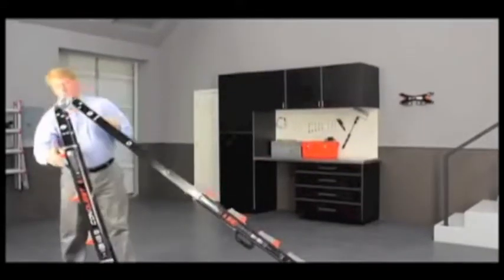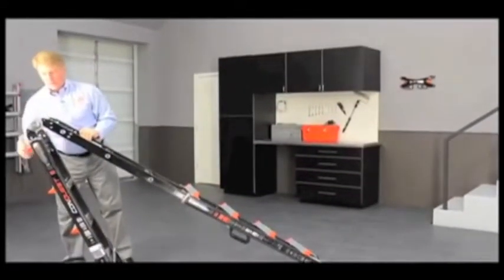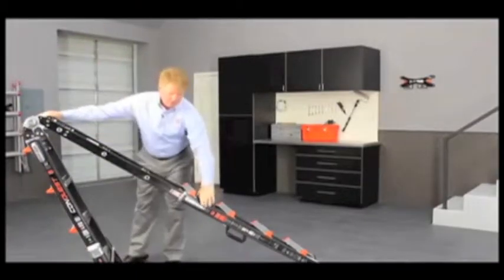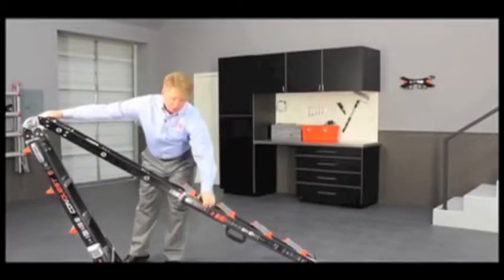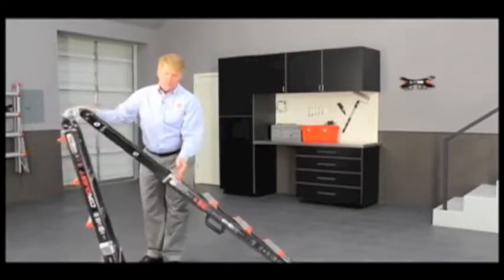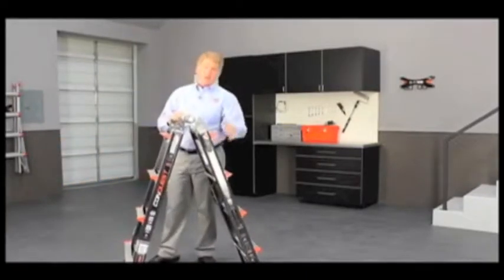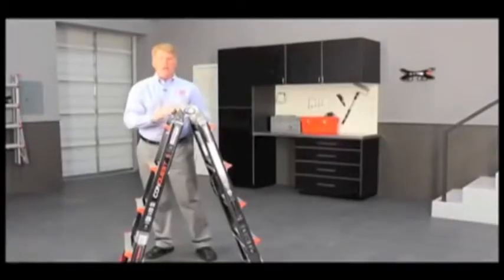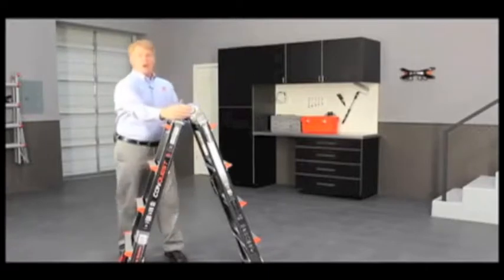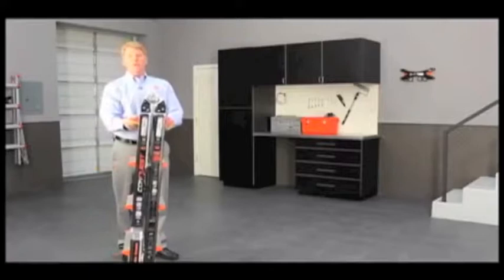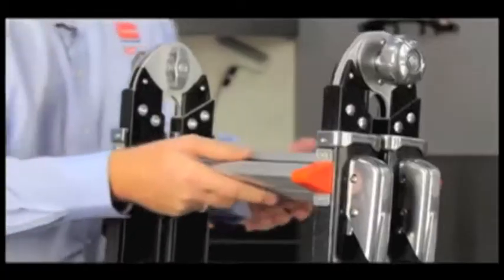As an a-frame ladder it can be used in a four foot, five foot, six foot, and seven foot size. To take it down, just reverse the process: squeeze those rock locks, telescope that half down, and then squeeze it at the top and lock it back into place. The hinge at the top, push in, and that'll go right back to the storage position.